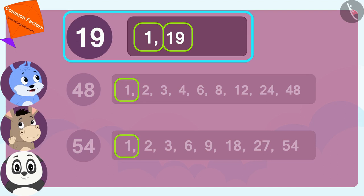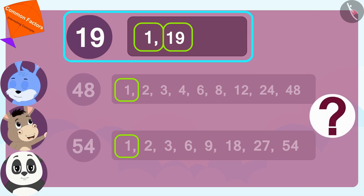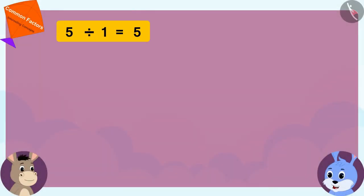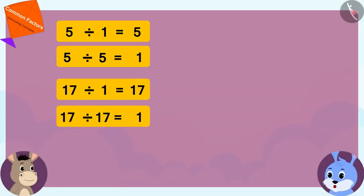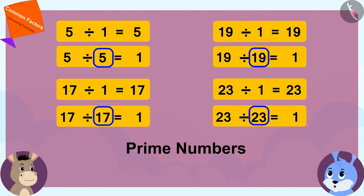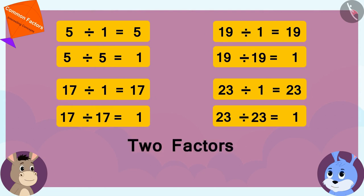But why does 19 have only two factors? Bola asked Bunny. There are many numbers like 19 which we can only divide by one and that number itself. We call such numbers prime numbers. And because these numbers can only be divided by one and that number itself, they have only two factors.